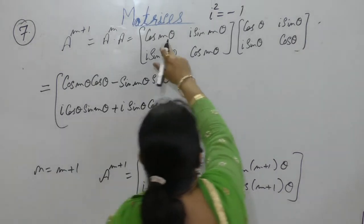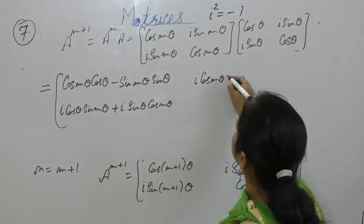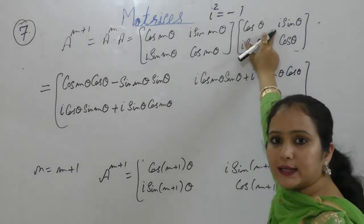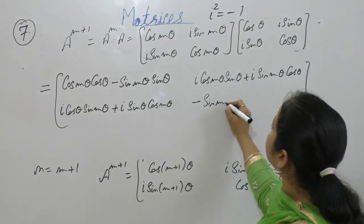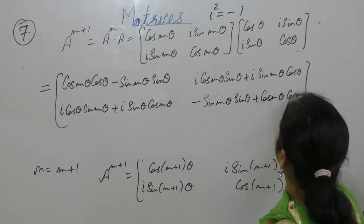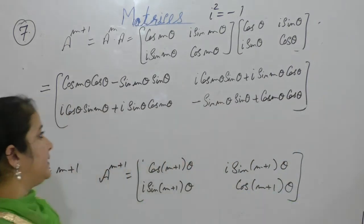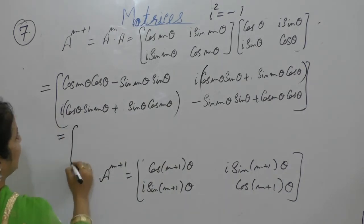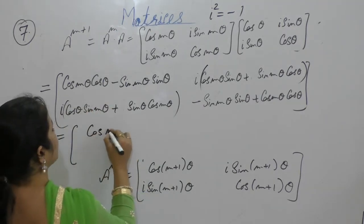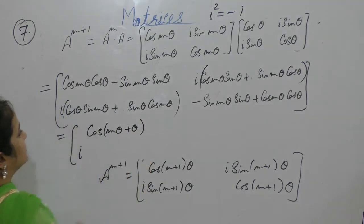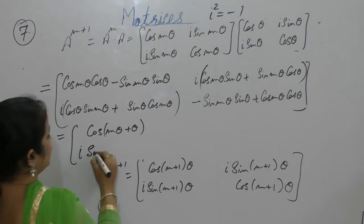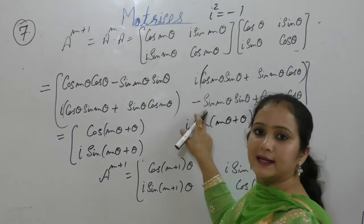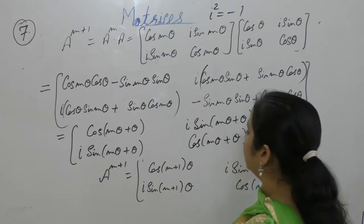Multiplying the matrices: cos m·isin θ, cos m·sin θ, isin m·cos θ, iota into iota is iota squared which is minus 1, giving sin mθ·sin θ plus cos mθ·cos θ. In the next step, take iota common. Now cos a·cos b minus sin a·sin b equals cos(a+b).